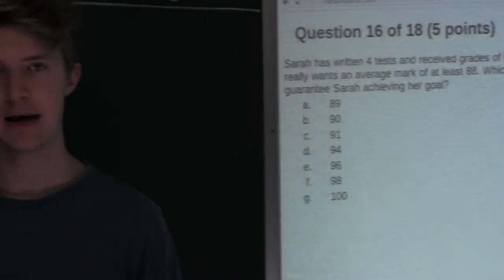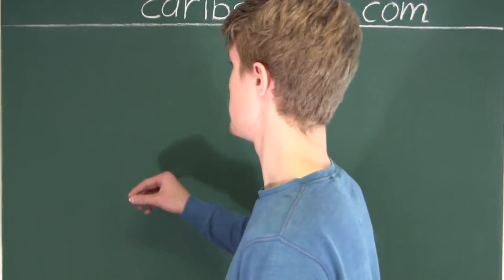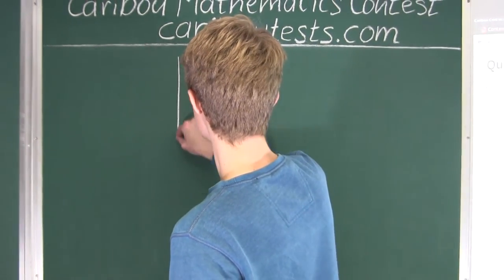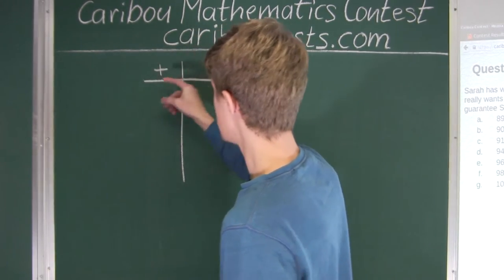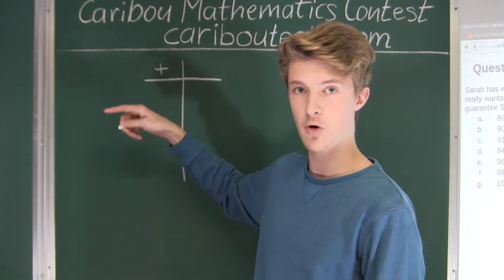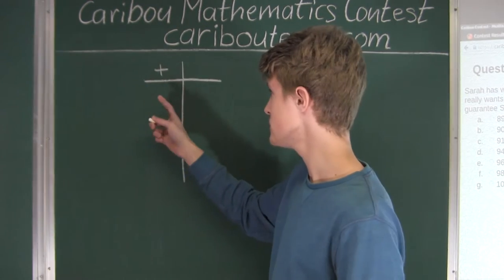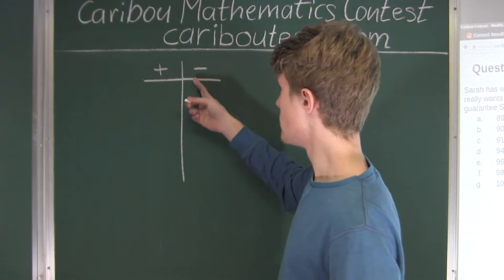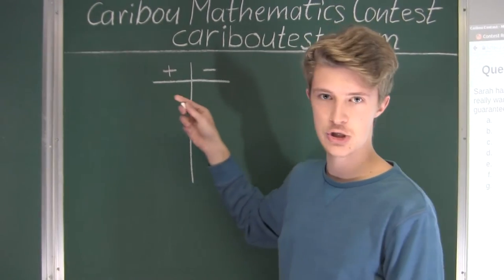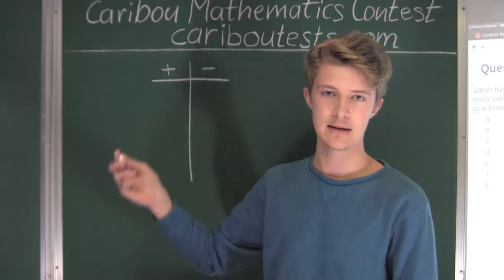Now we're going to make a little table. This plus sign will show the tests where she got higher than her intended average of 88, and this negative sign will represent the tests where she got less than her intended average of 88.